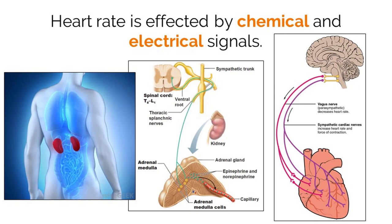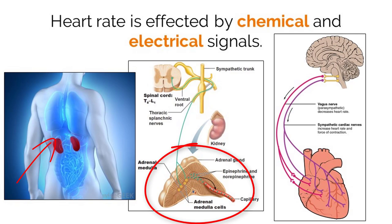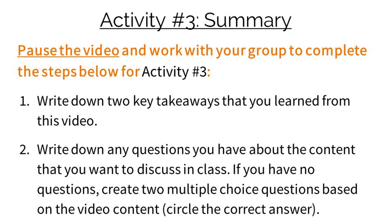Heart rate can be changed by two structures within the body. The medulla in the brain controls the heartbeat by sending electrical signals to the SA node, which can either increase or decrease heart rate depending on what the body needs. Another method is through chemical messages called hormones — the adrenal glands, located on top of the kidneys, can secrete epinephrine to increase heart rate, usually in response to a fight-or-flight situation, like being attacked by a bear.